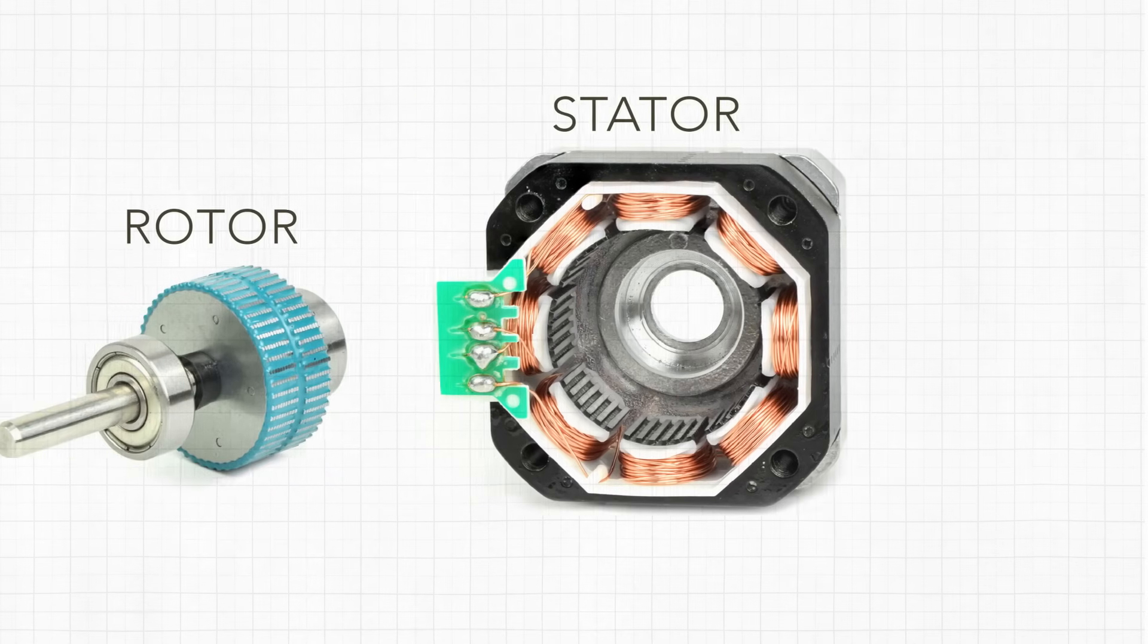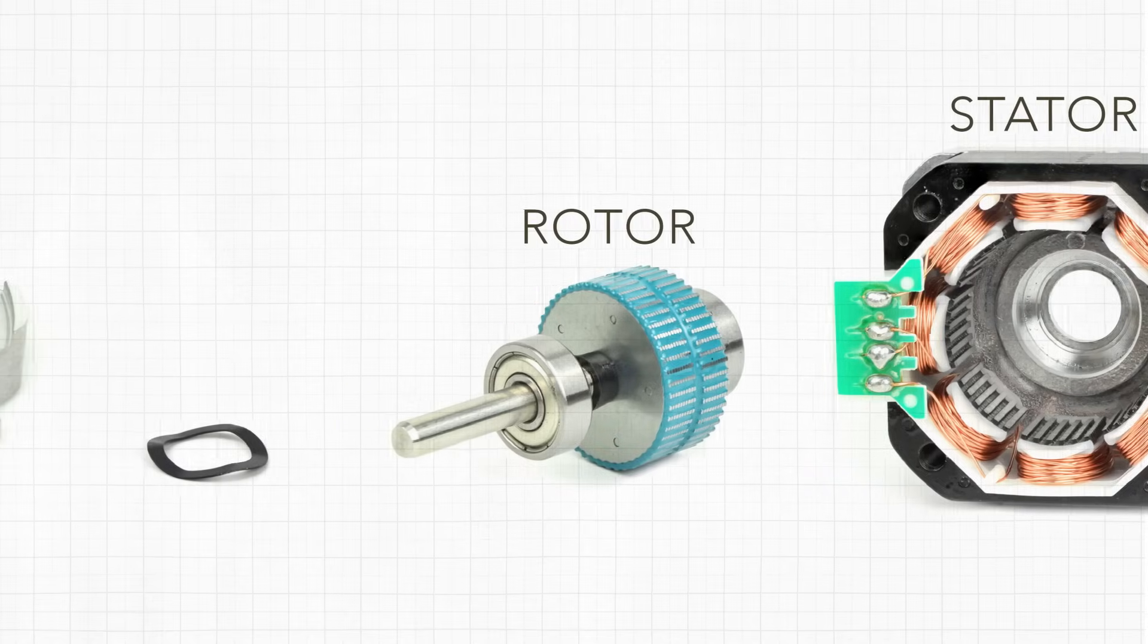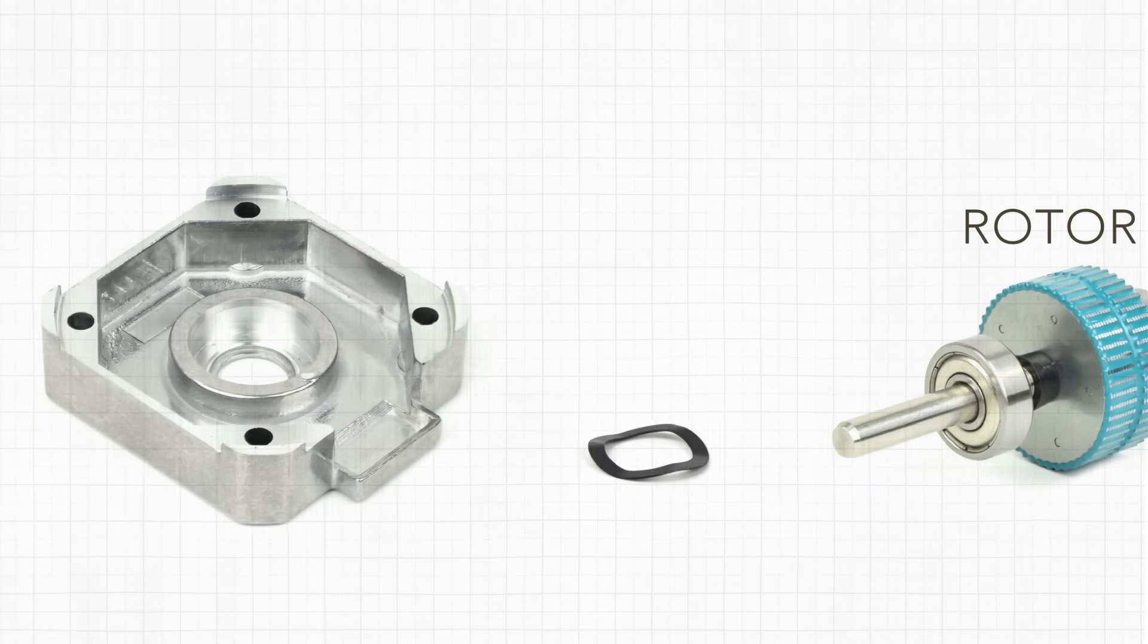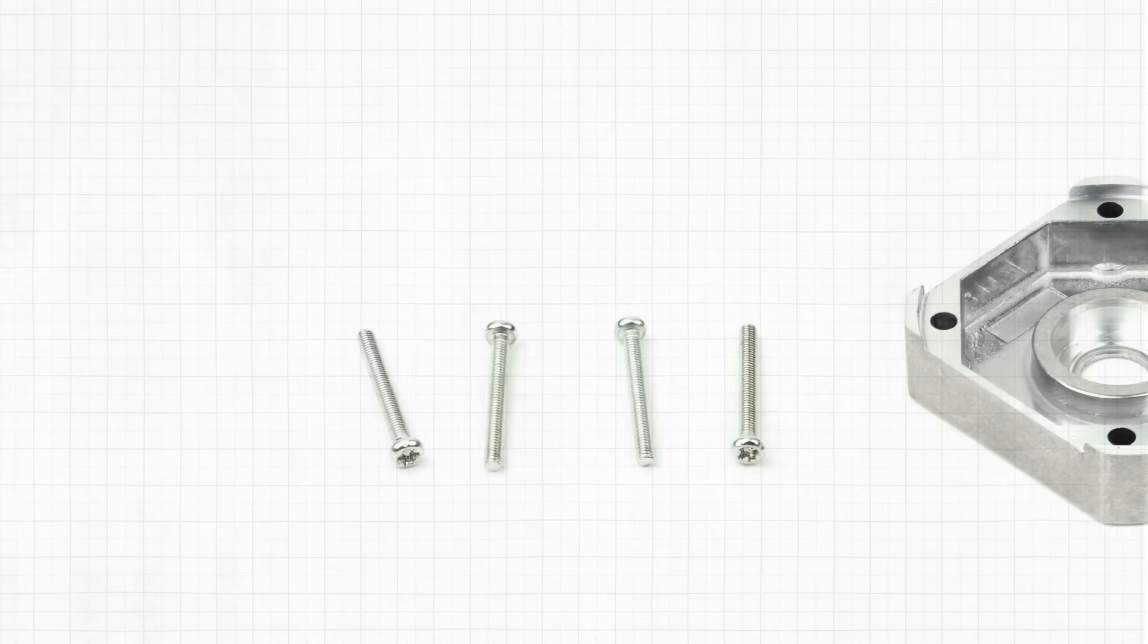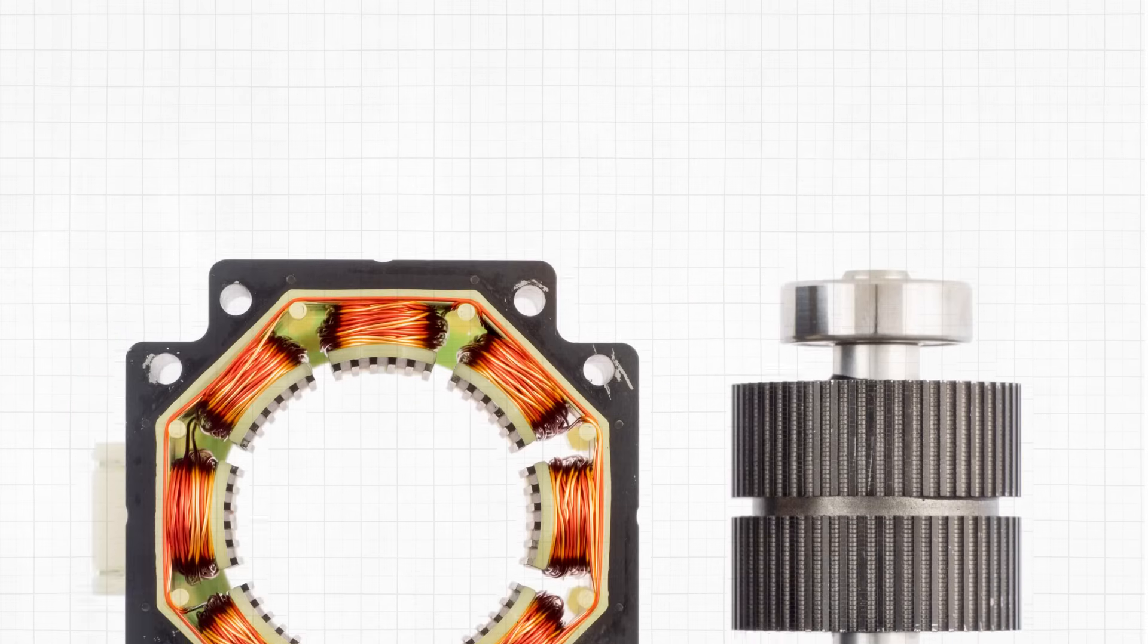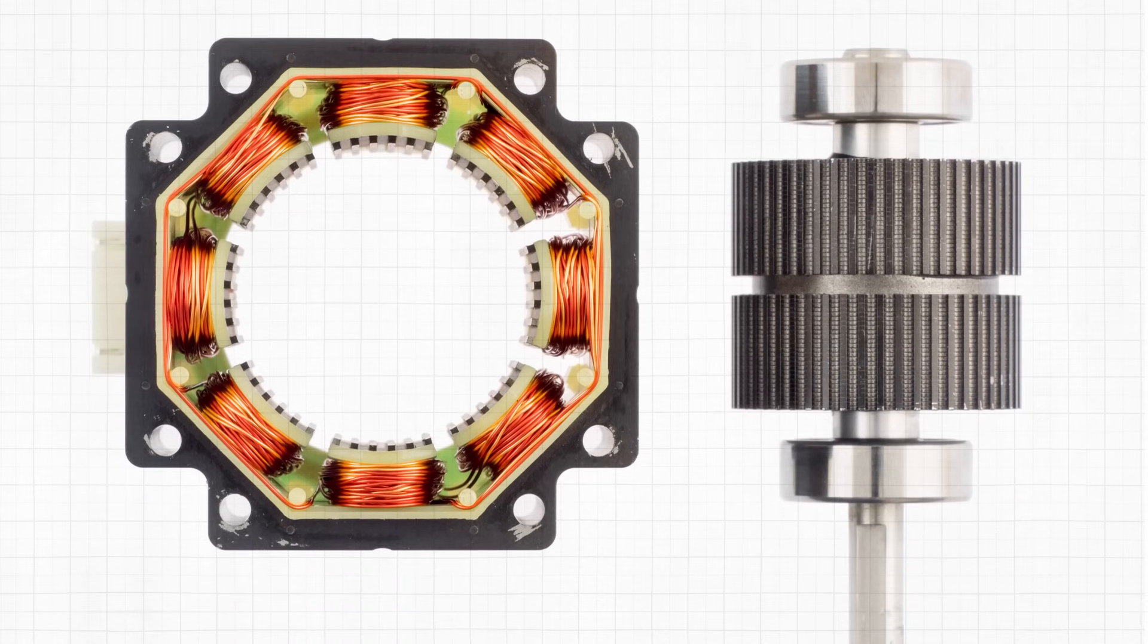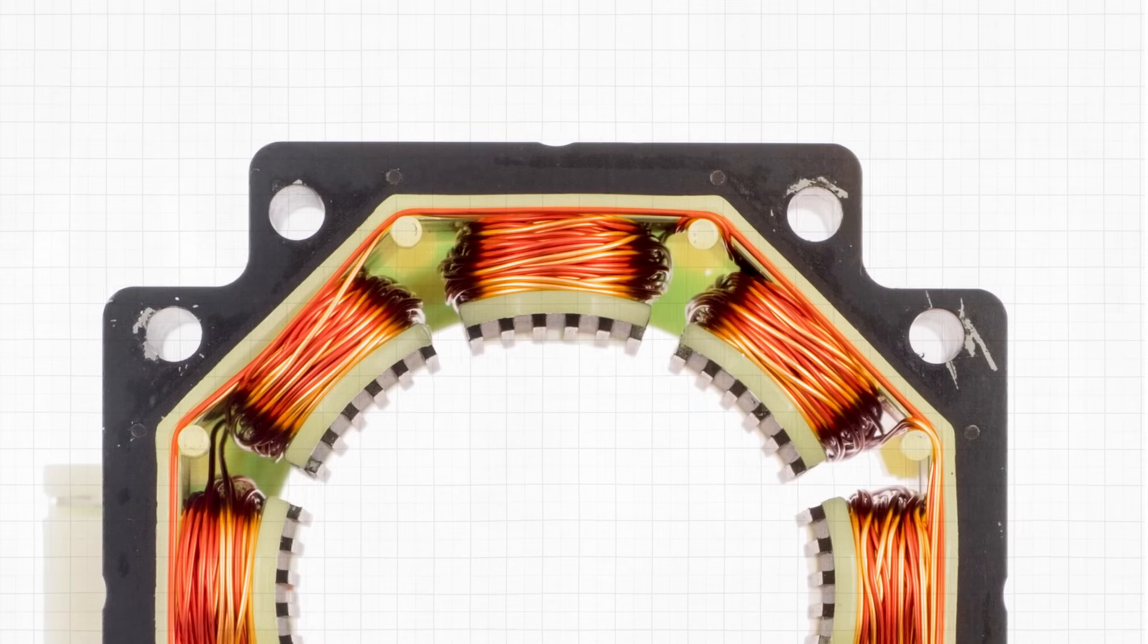Hybrid stepper motors are more expensive than the other stepper motor types, but provide better step resolution, torque, and speed. In fact, hybrid steppers combine the best features of permanent magnet and variable reluctance type stepper motors. The rotor is multi-toothed as in a variable reluctance motor and contains an axially magnetized magnet concentric with its shaft.